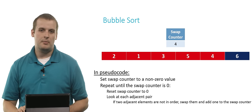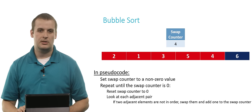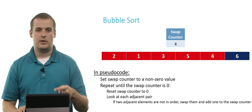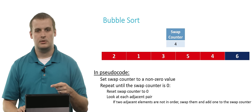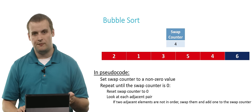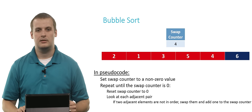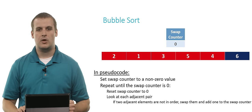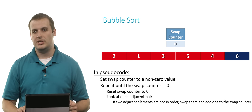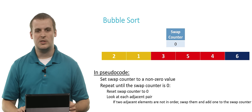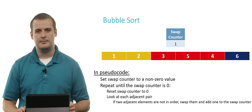We have finished one pass through bubble sort. The swap counter is four, so we're going to keep repeating this process. We reset the swap counter to zero and look at each adjacent pair again. We start with two and one — they're out of order, so we swap them and add one to the swap counter.